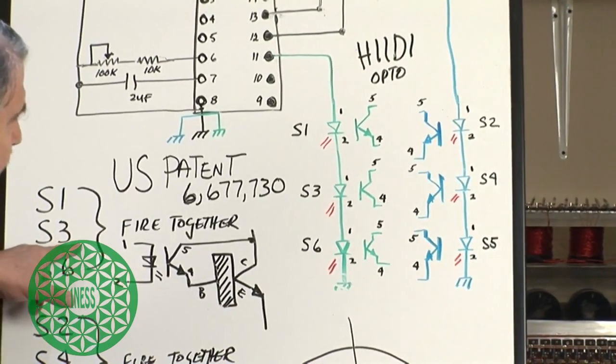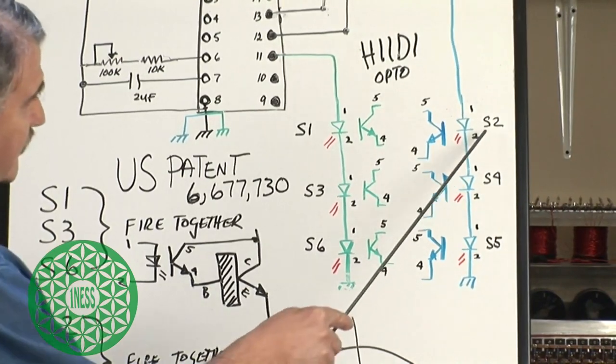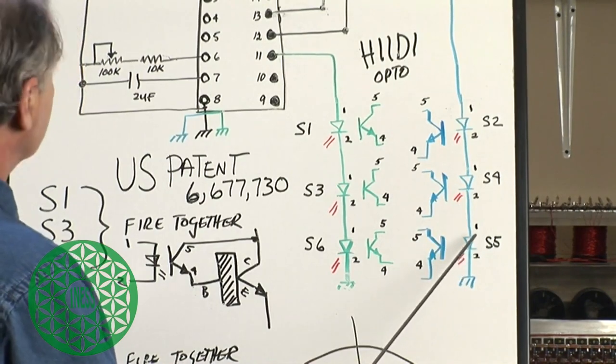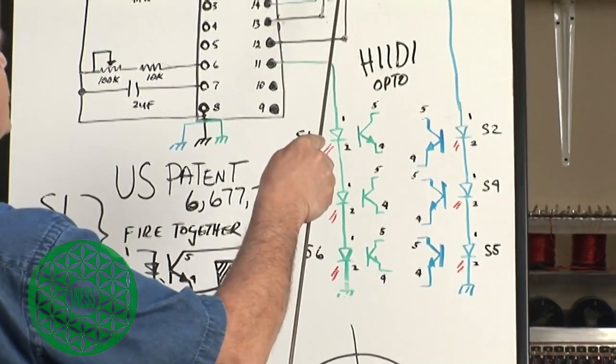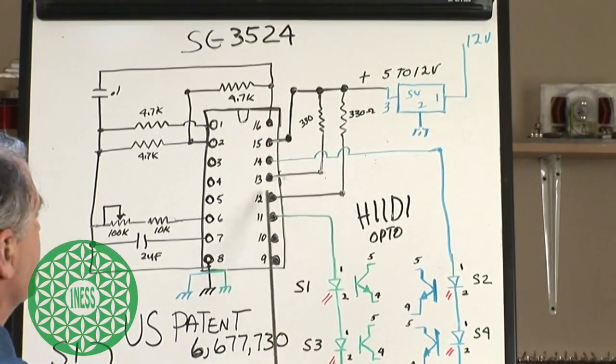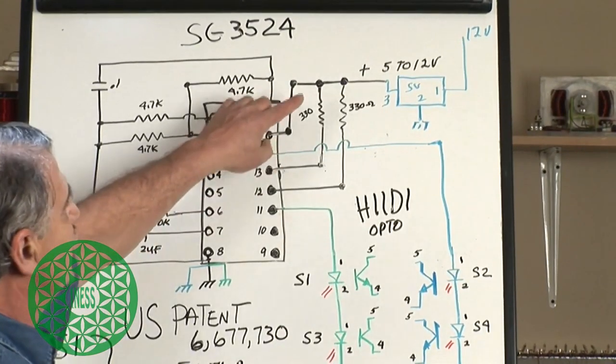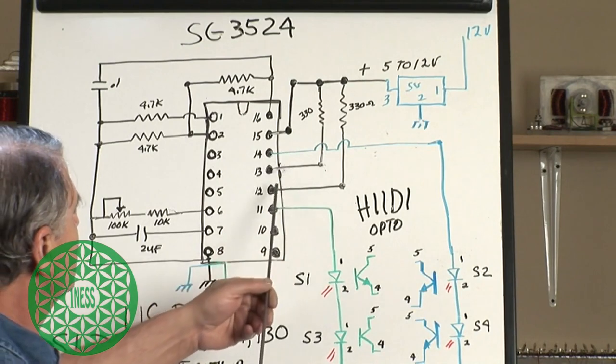And then this side goes off, and this side goes on, and that would be S2, S4, and S5. And one more time, it's very important that you select the current through these diodes by these resistors up here on pin 13 and pin 12.